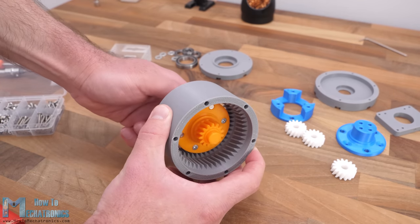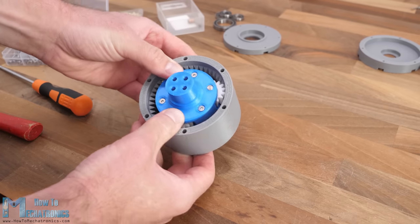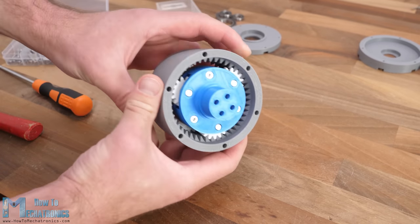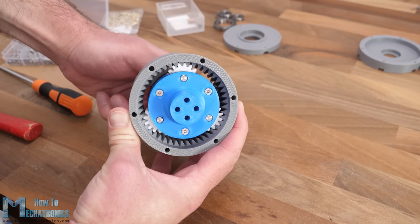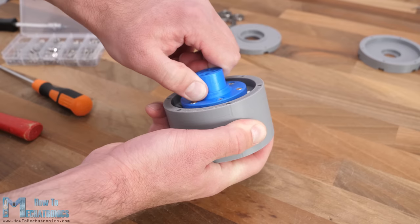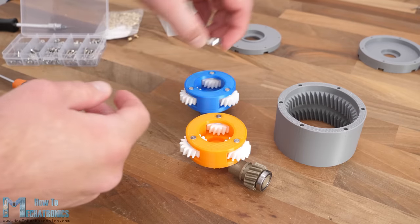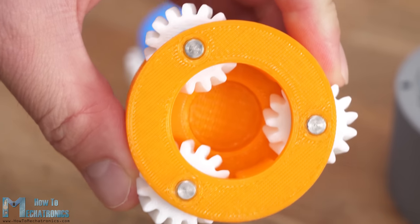The second planetary gear set is assembled the same way and once we insert it in place into the housing we can see how the whole planetary gearing system works. The output shaft rotates 16 times slower than the input. Before we continue with the assembly we need to take out the carriers to insert the bearings inside them to support the sun gear or the input shafts.